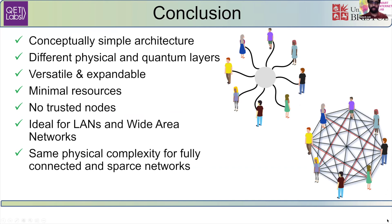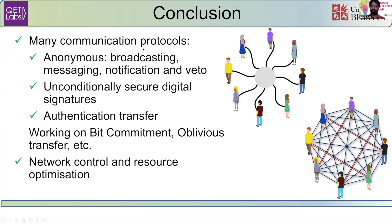To conclude, what we have is a conceptually simple architecture which has highly differentiated physical and quantum layers, making the whole thing very versatile and expandable with minimal resources. We do not need to use trusted nodes, and we are aiming at this as a solution for local area or city area networks. It has the same physical complexity for any complexity of the entanglement distribution stage. We have implemented a whole set of protocols and are working on others, including machine learning network control, resource optimization, and co-existence with classical and quantum signals along the same fiber.